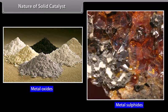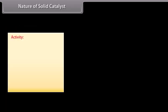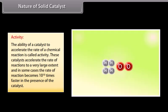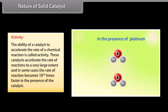Metals, alloys of metals, metal oxides, metal sulfides, or mixtures of these are generally used as solid catalysts. Two important aspects are: activity — the ability of a catalyst to accelerate the rate of a chemical reaction; in some cases the rate becomes 10¹⁰ times faster in the presence of a catalyst. For example, a mixture of pure H₂ and O₂ does not react, but in the presence of platinum catalyst they combine to form water with explosive violence.